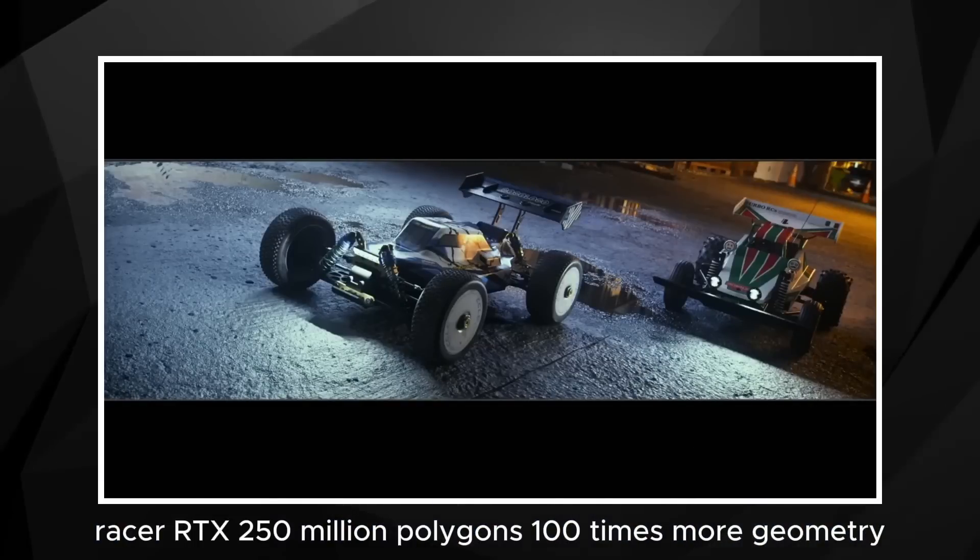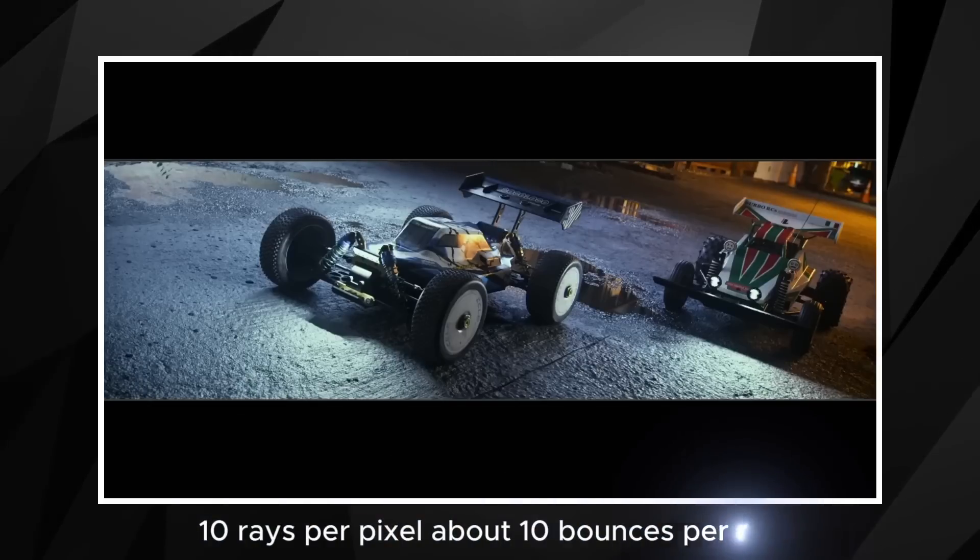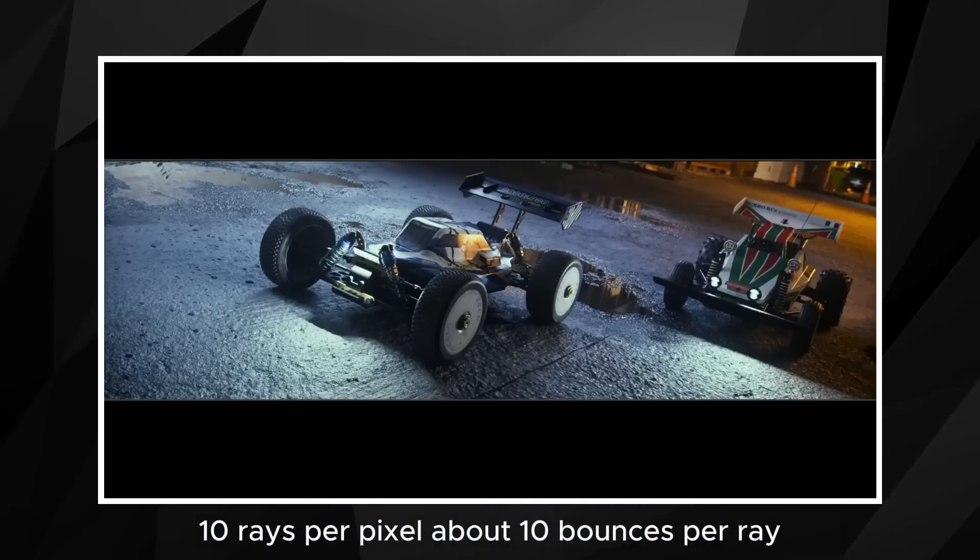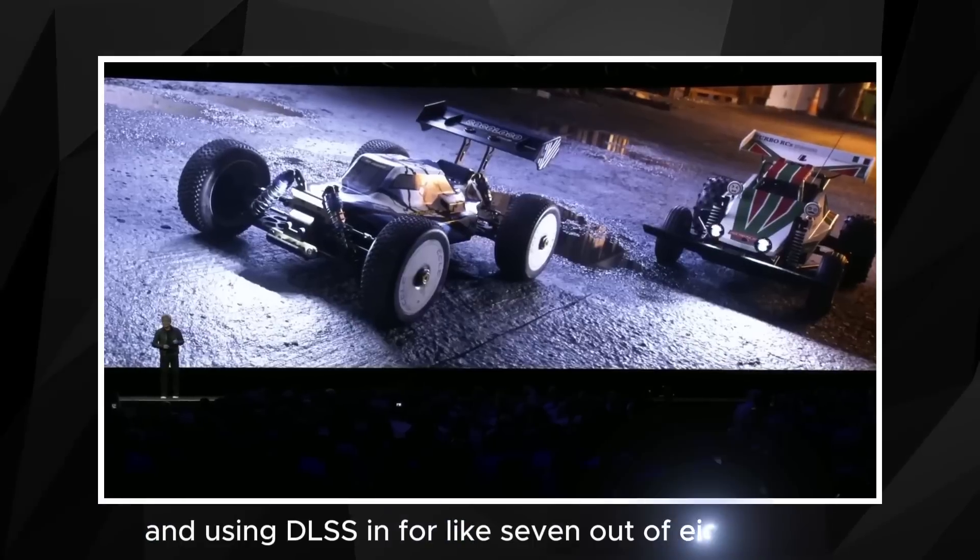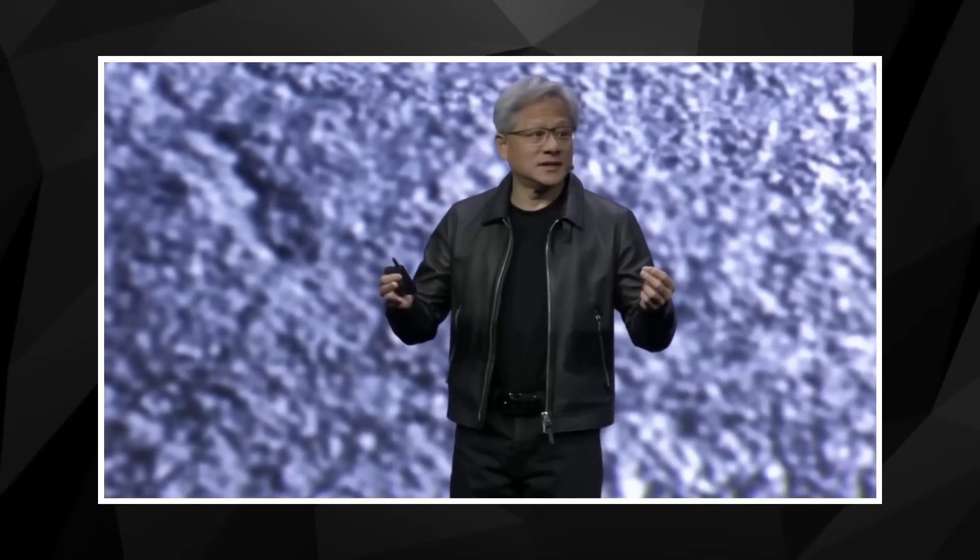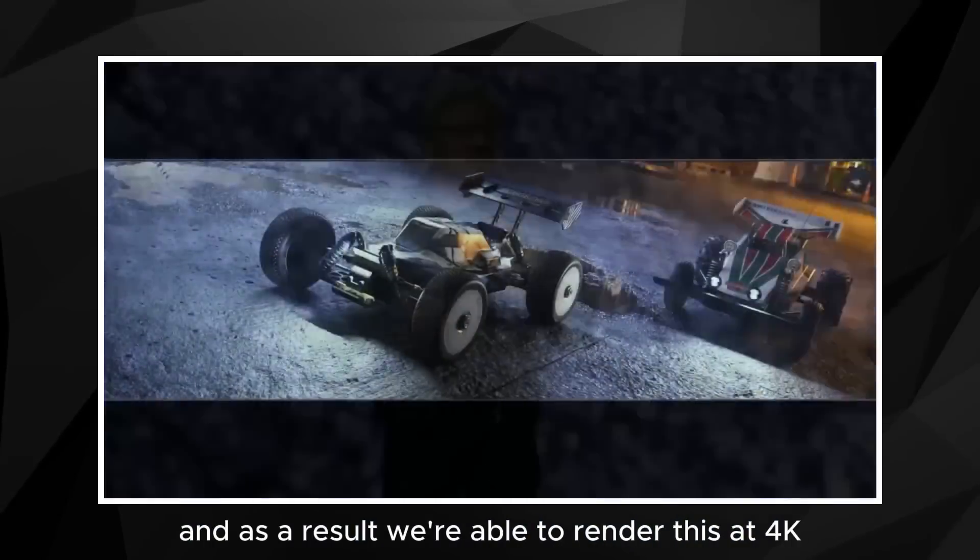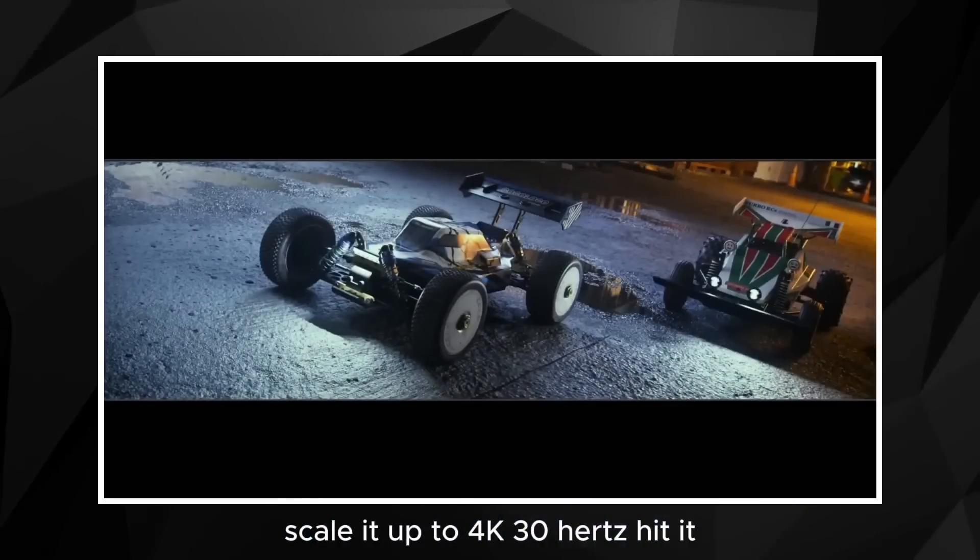Racer RTX: 250 million polygons, 100 times more geometry, 10 rays per pixel, about 10 bounces per ray. And using DLSS, infer like 7 out of 8 pixels, computing only 1 out of 8. As a result, we're able to render this at 4K, scale it up to 4K 30 Hertz.